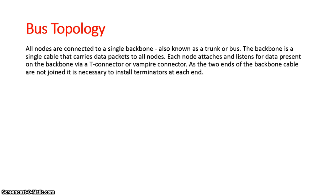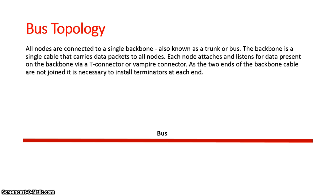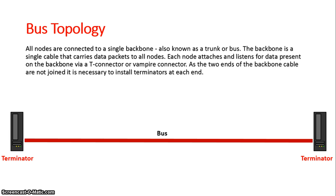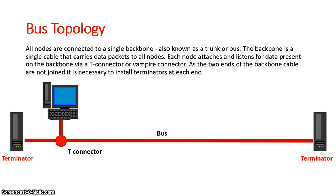In a bus topology, all the devices are connected to one main cable, known as the bus. At each end there are terminals, and these terminals destroy data once they reach them, because otherwise data would bounce up and down the network. Devices are connected to the bus line using T-connectors.